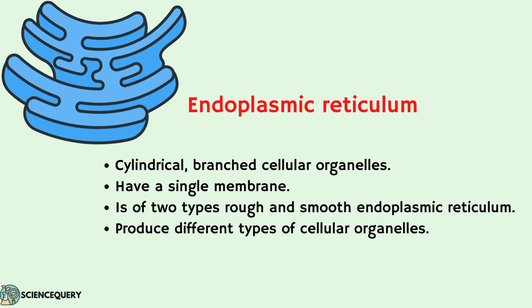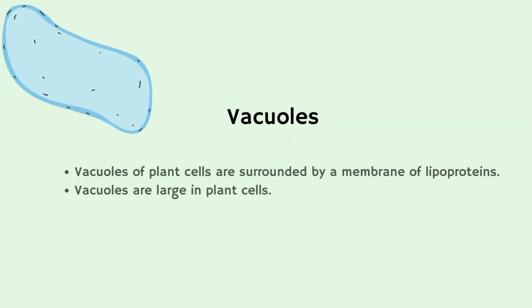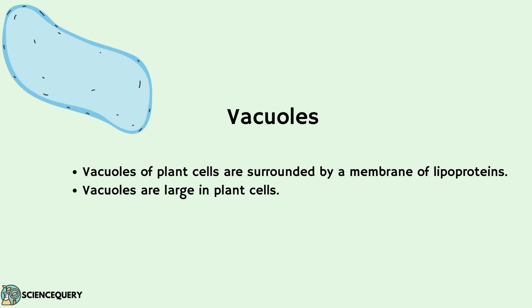Endoplasmic reticulums are also single membrane and are of two types: rough and smooth endoplasmic reticulum that produce different types of cell organelles. Vacuoles are large in plant cells, surrounded by lipoprotein membrane.